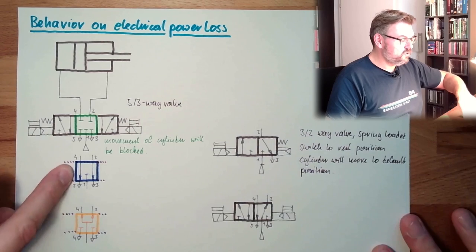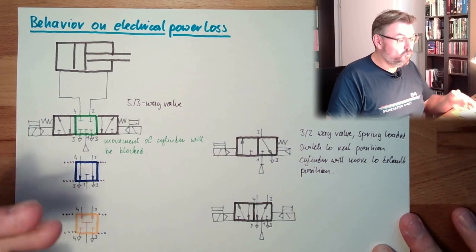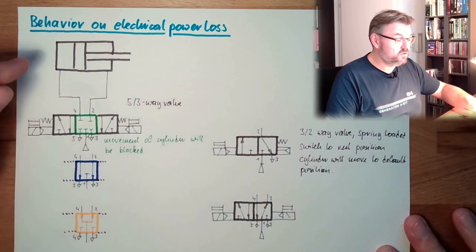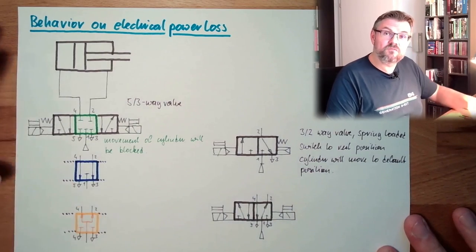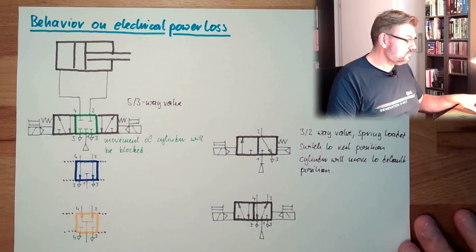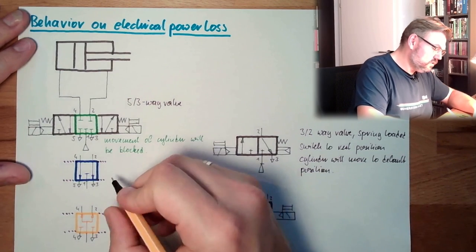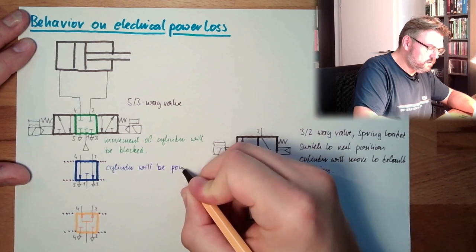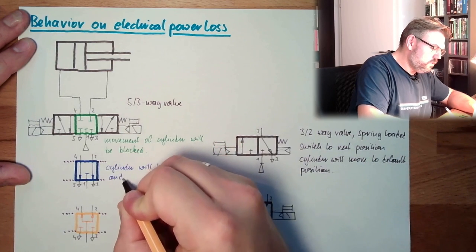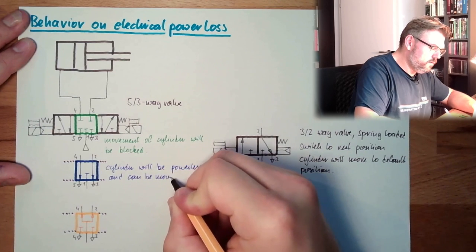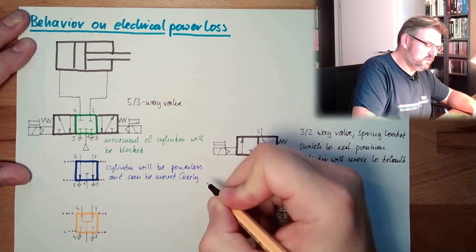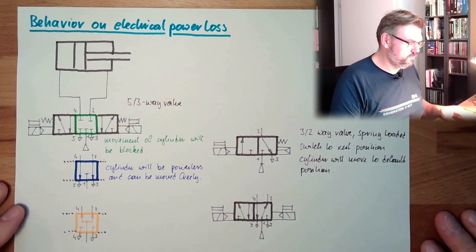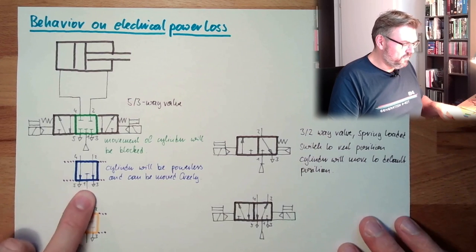If we have it like this, so if both sides are connected to exhaust, or in hydraulic this would be tank, then the cylinder might move freely. So if we have external load, external forces somewhere, the cylinder will go wherever the external forces put it. Okay? So here, cylinder will be powerless and can be moved easily. Okay? It can be moved wherever you want to put it because simply there is no force applied. The pressure line is blocked.